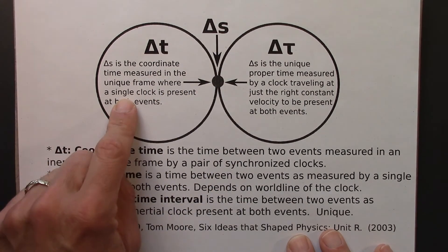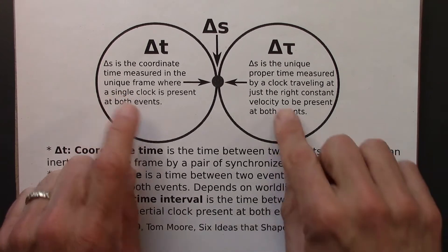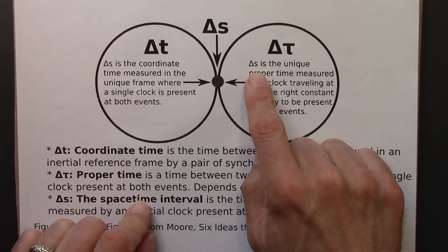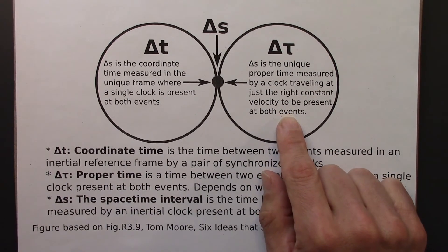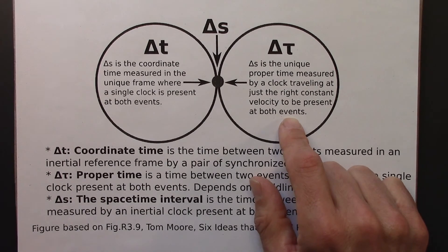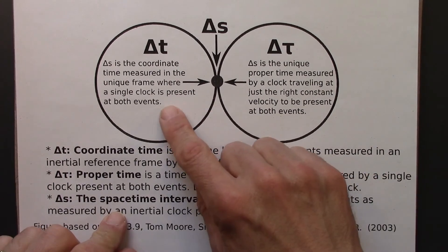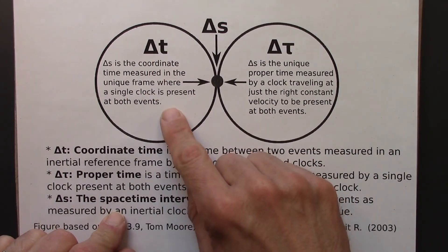So in that case, delta s is a unique proper time measured by a clock traveling at just the right velocity to be present at both events. So that's a single clock that's in an inertial reference frame. A clock in an inertial reference frame that's present at both events. That's a special type of coordinate time.